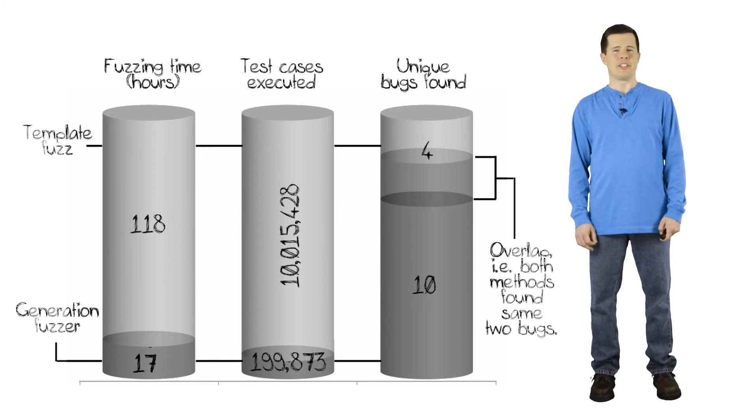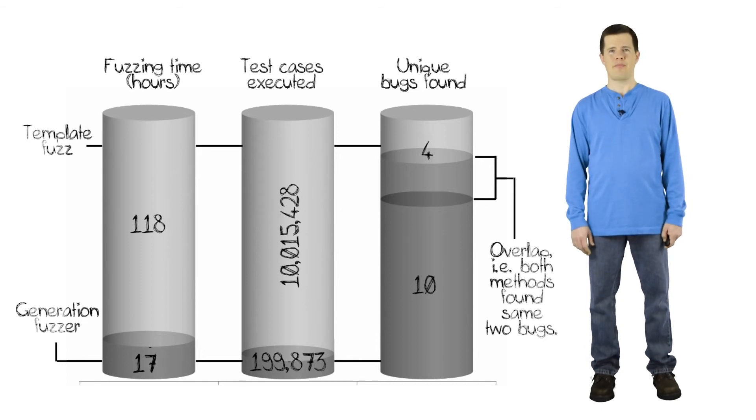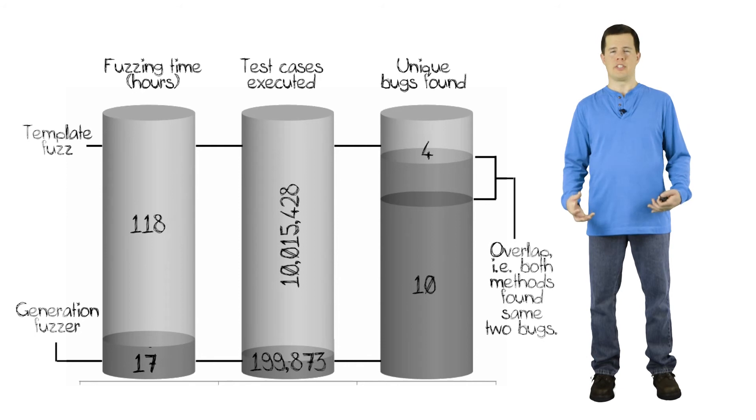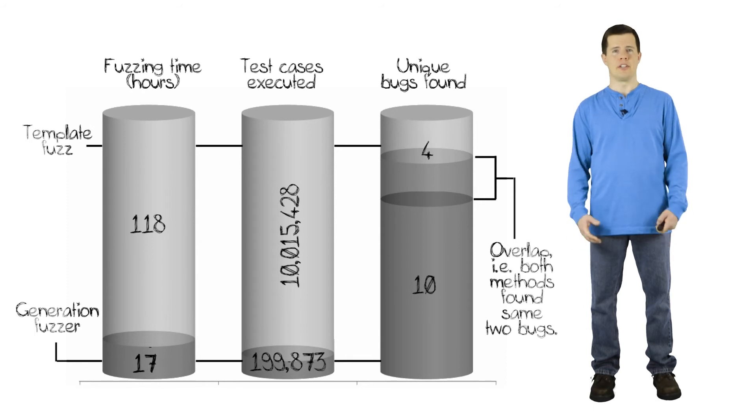But the other interesting thing about these results is that the template fuzzer actually found two bugs that the generational fuzzer didn't. And that just goes back to fuzzing being an infinite space problem where these different kinds of fuzzers work differently, choose different sets of inputs, different test cases to send to the target, and so they did uncover slightly different vulnerabilities.